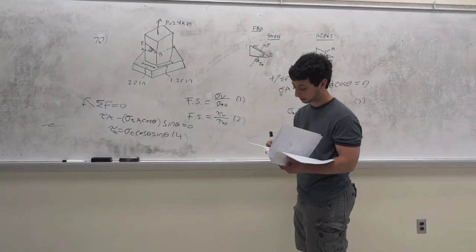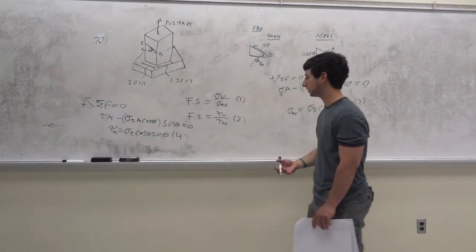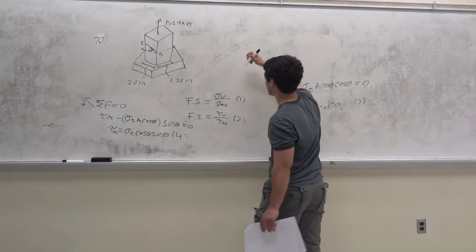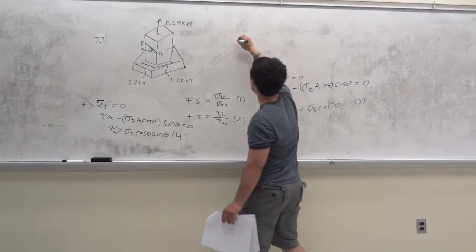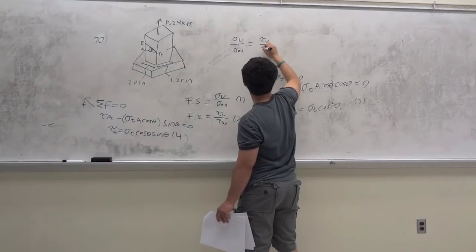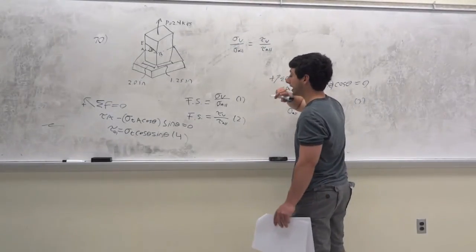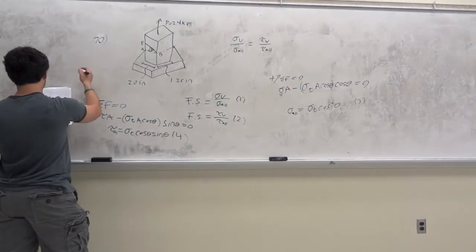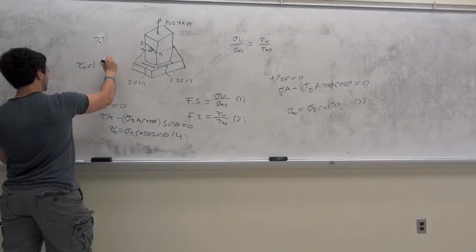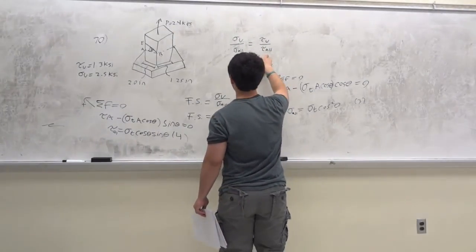They say find the value of theta for which the factor of safety of the member is maximum. That means the two factor-of-safety expressions are equal, so sigma_U over tau_U equals 1 over tan theta. Flipping both sides: tan theta equals tau_U over sigma_U. Therefore theta equals the arctangent of tau_U over sigma_U — that's arctan(1.3 over 2.5) — which equals 27.5 degrees. That's the answer for part A.